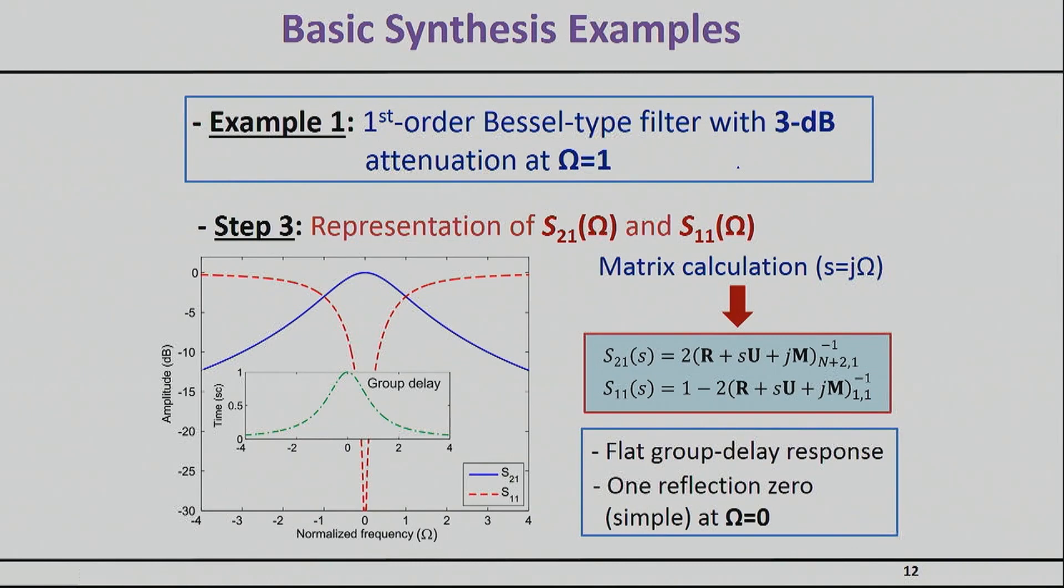So, indeed, if you go ahead and you plug in the calculated S21 and S11 based on the coupling matrix and with an M01 to be 1 by root 2, you will basically get this graph right here. And in this graph I have also given you the group delay, which of course you can plot once you have the S21 and the S11.